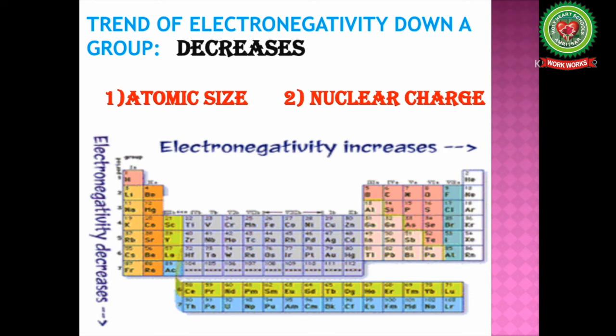This increase in atomic size means there is a decrease in the nuclear pull on the outermost shell. Hence, the value of electronegativity decreases down a group.